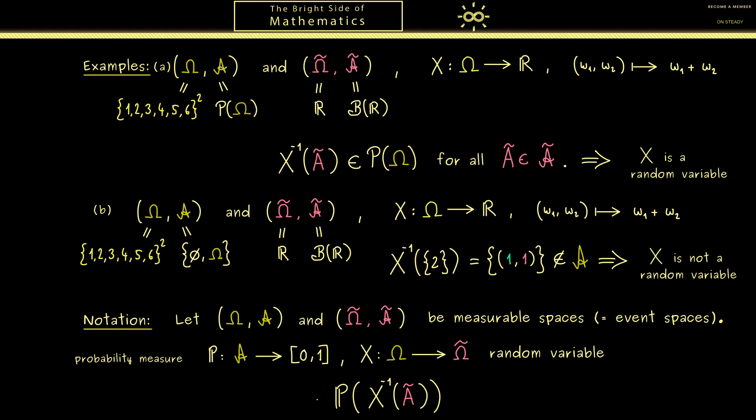Therefore one usually uses a shorter but strange notation for this. One simply writes P(X ∈ Ã). First it looks a little bit odd, but you will see this a lot in probability theory. And indeed it makes a little bit more sense when you use the definition of the pre-image, which is simply the set of all lowercase ω in capital Ω with the property that X(ω) lies in Ã.